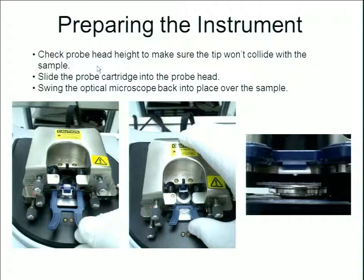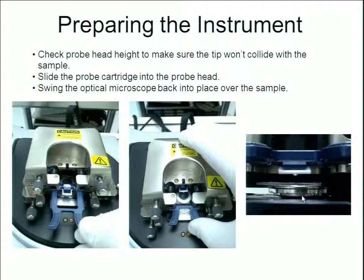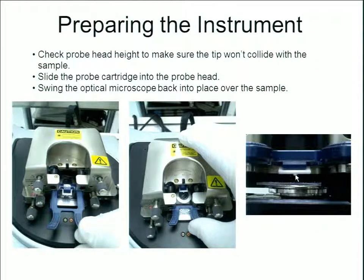To prepare the instrument, check the probe head to make sure there won't be any collision, then carefully slide the probe cartridge into the probe head. Swing the optical microscope back into place — it will look down at the cantilever to help with laser alignment. From a side view we can see: the piezoelectric, the magnetic plate, the magnetic disc with the sample, the cantilever, the chip, the chip carrier, and the probe cartridge, all inside the probe head.